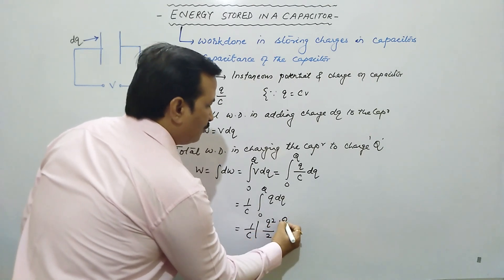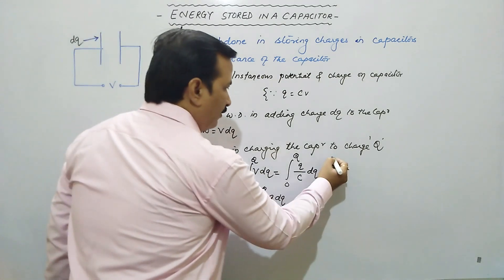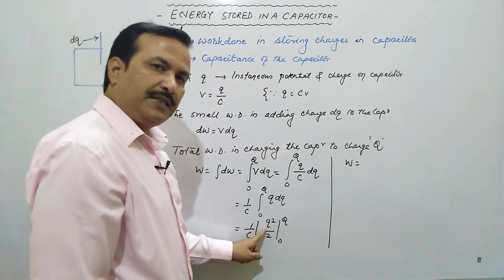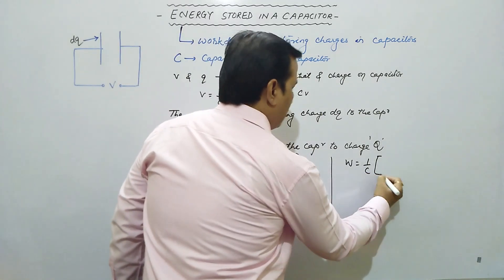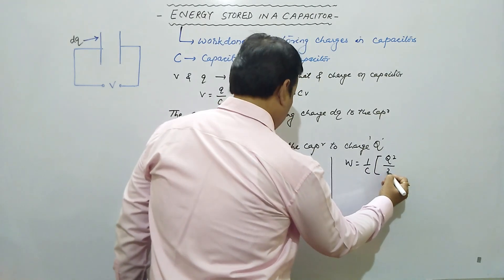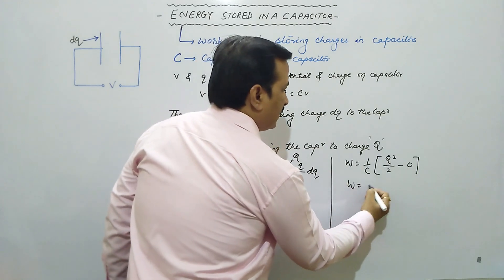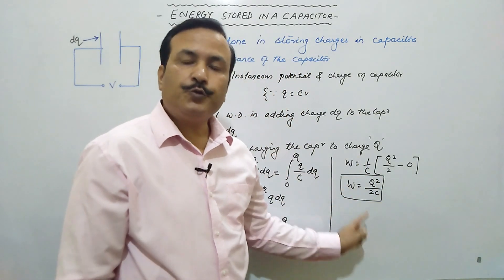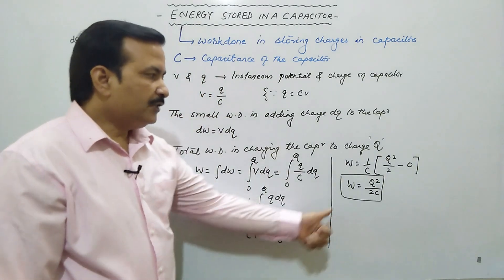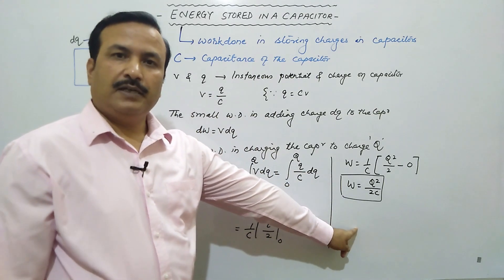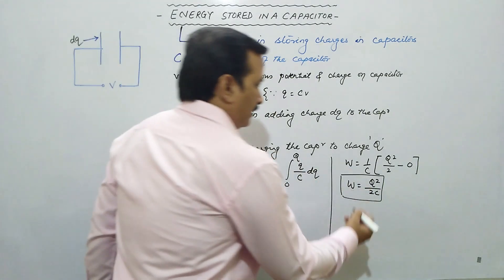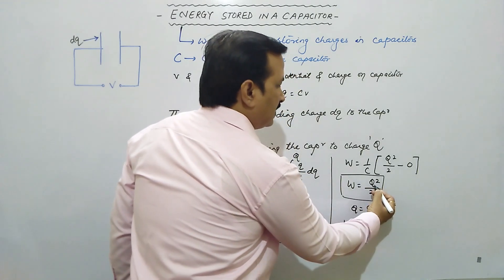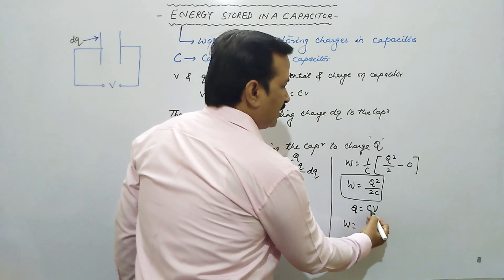Now work done will be equal to how much we are getting. Upper limit we will write capital Q here. So 1 upon C, upper limit is capital Q, so Q square upon 2 minus 0. So this work done we are getting Q square upon 2C. This work done is stored as energy of the capacitor. This work done is the capacitor's energy.